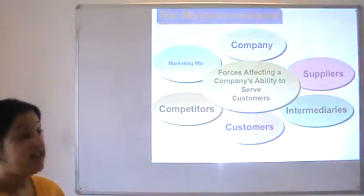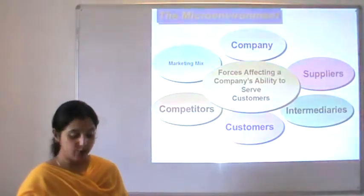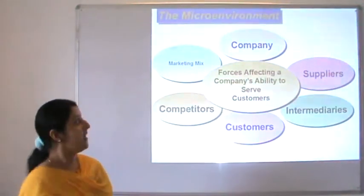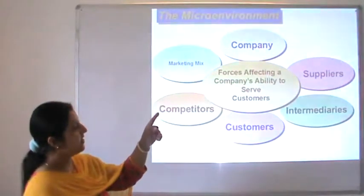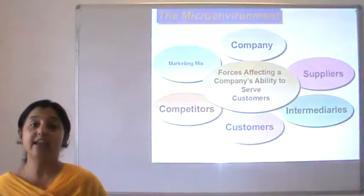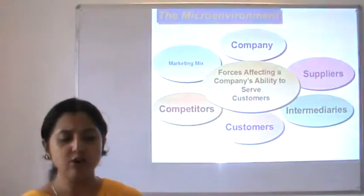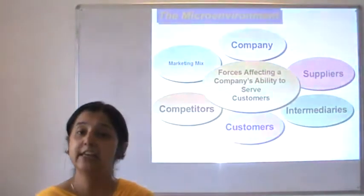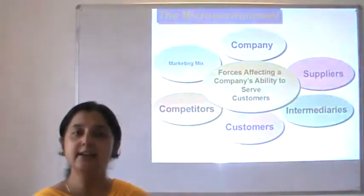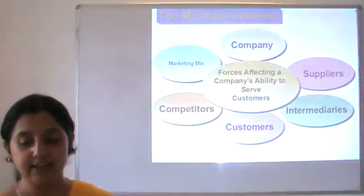This slide helps us understand the six broad micro environmental forces an organization needs to control. The micro environmental factors are internal factors — controllable or fully controllable. The six forces, going clockwise from company, are: suppliers, intermediaries, customers, competitors and the marketing mix — forces which affect the company's functioning to serve the customer. 'Company' refers to the board of management, the leader, the vision, mission and objective of the company. Organizations with clearly laid out objectives have greater chances to succeed.